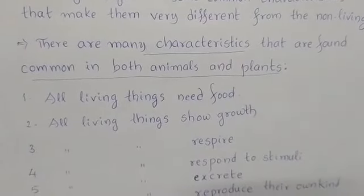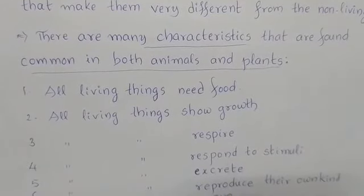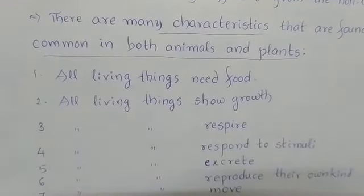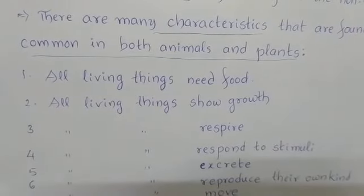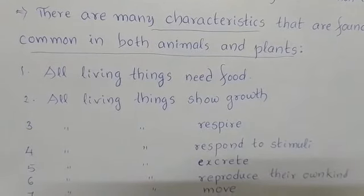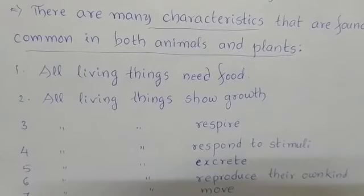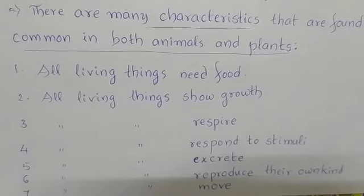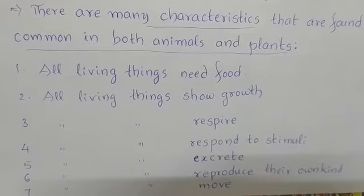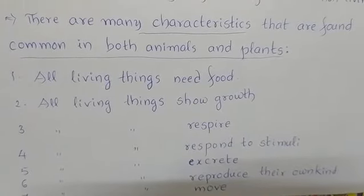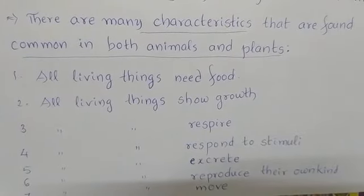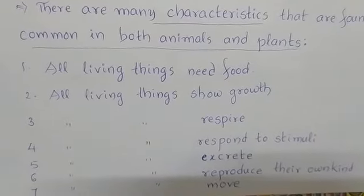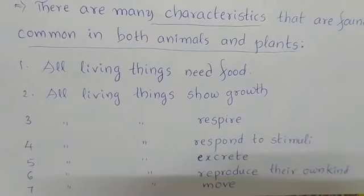These common characteristics make living things very different from non-living things. All living things need food. All living things show growth. All living things respire. All living things respond to stimuli. All living things excrete. All living things reproduce their own kind. All living things move. And after a certain time, all living things die — individually, every living thing will die. These are the common characteristics found in both plants, animals, and other living organisms.